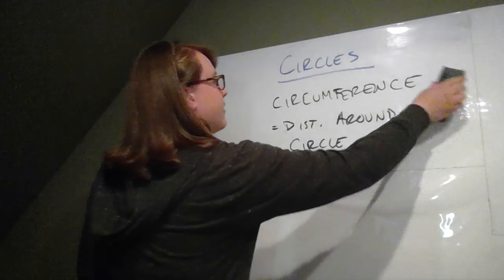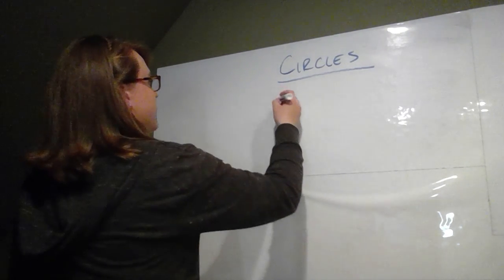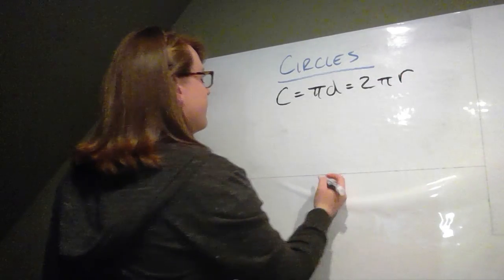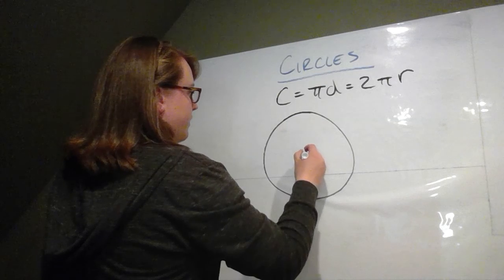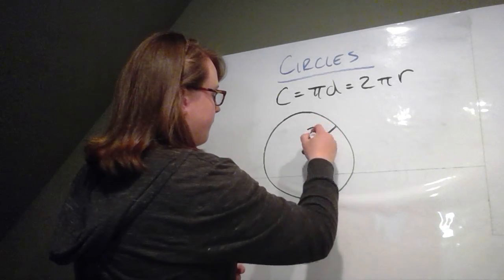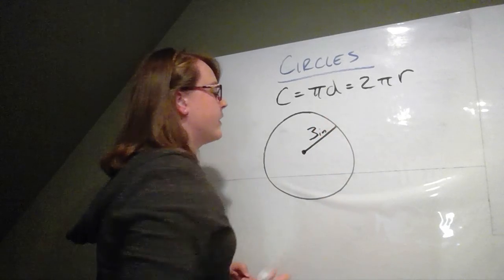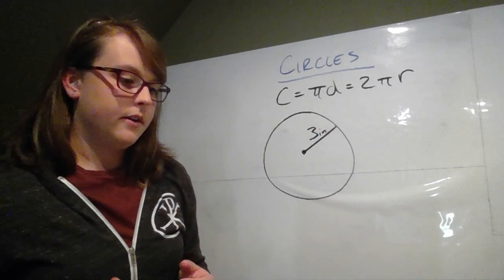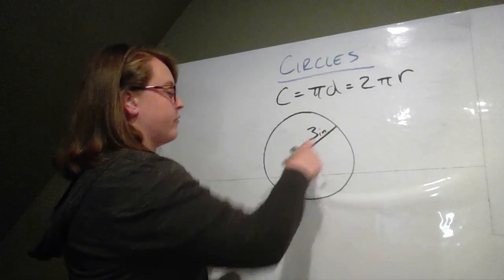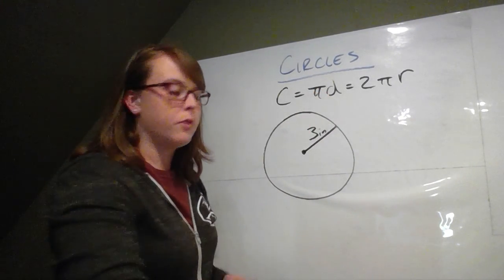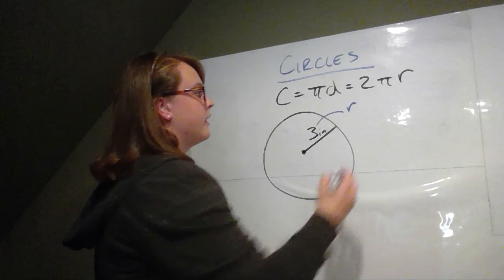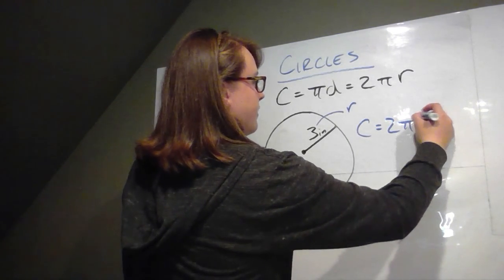Let's do an example of finding circumference. Our equation is: circumference equals pi times diameter, or 2 pi r. Here's our circle, and for this one the radius is 3 inches. So if we want to find the circumference, all we have to do is plug it into one of these equations. Since this is a radius, I could multiply it by 2 to make it a diameter first, or I could plug it into the equation that involves the radius. So our circumference is 2 times pi times the radius, which is 3.